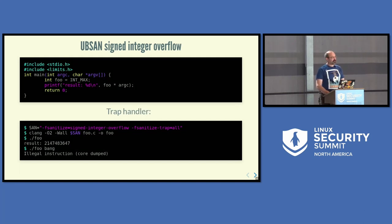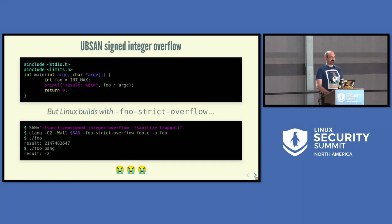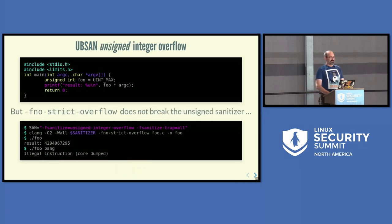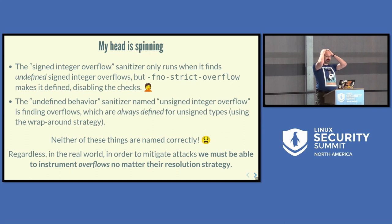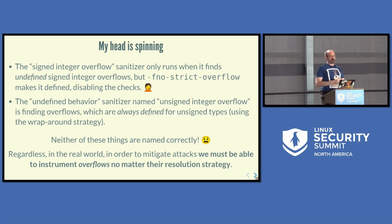In trapping mode, we don't even get the report — it just dies immediately. This is great, but the signed integer overflow sanitizer doesn't work with -fno-strict-overflow, because the overflow is no longer undefined behavior — it's been defined to wrap. Meanwhile, the unsigned integer overflow checker doesn't break either, even though it's defined behavior, because it does report overflows for unsigned types using the wraparound strategy. So neither of these things is named correctly.